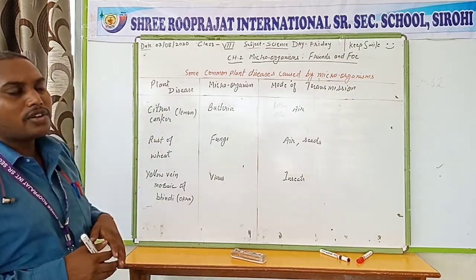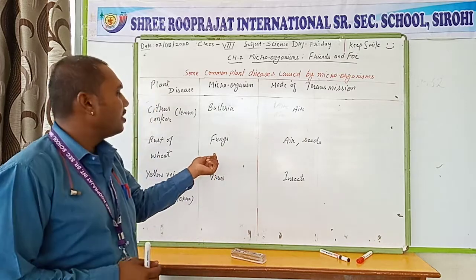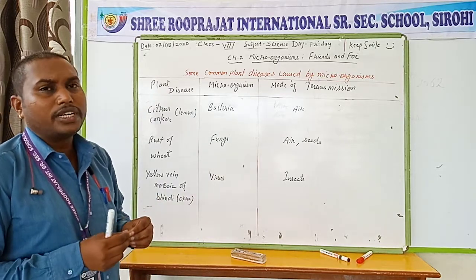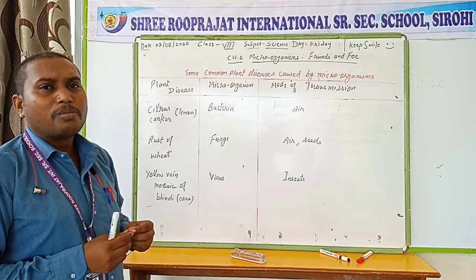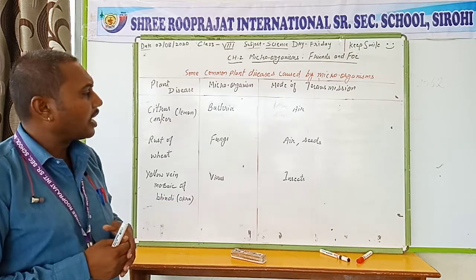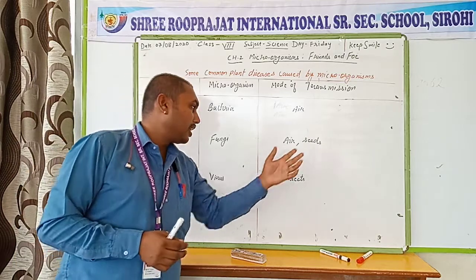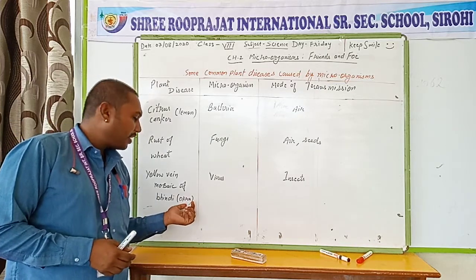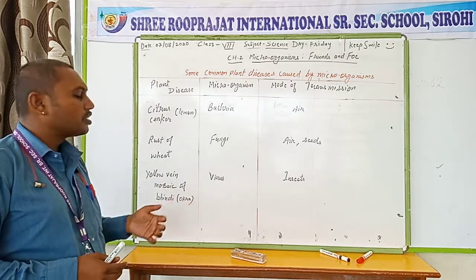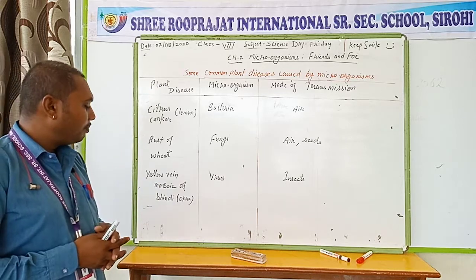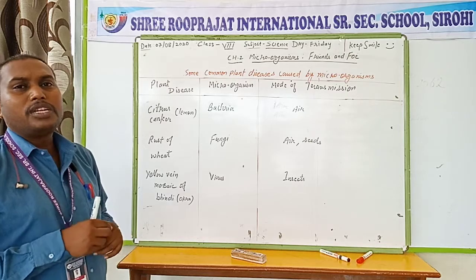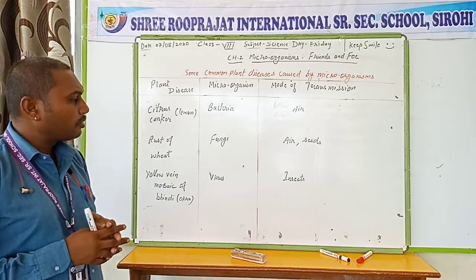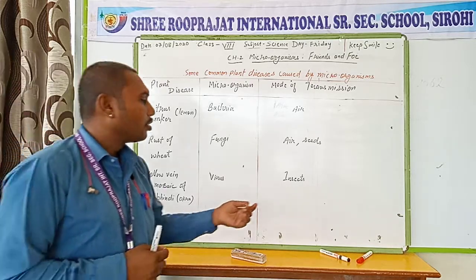Rust of wheat is a disease caused by fungi that affects the wheat plant, causing the wheat seeds not to develop properly, turning into brownish powder. It can be spread through air or seeds. The third plant disease is yellow vein mosaic, which affects bhindi (okra/ladyfinger). The leaves of the okra become yellowish, flowers do not develop, and fruit formation is affected. It can be spread through air or insects.